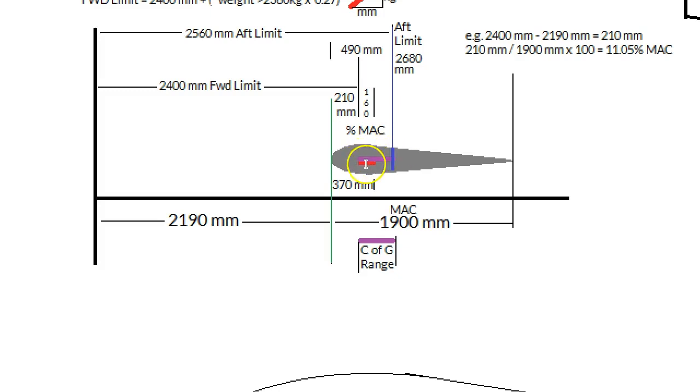And here is our forward limit. So in other words, when we're very light at our zero fuel weight, our forward limit can't be in front of that. And when we're fully ready to take off, it can't be in front of that. Okay, and as we get lighter, it can move forward.